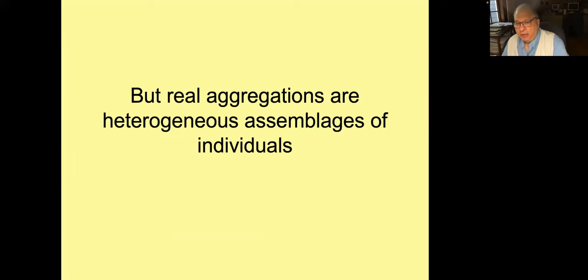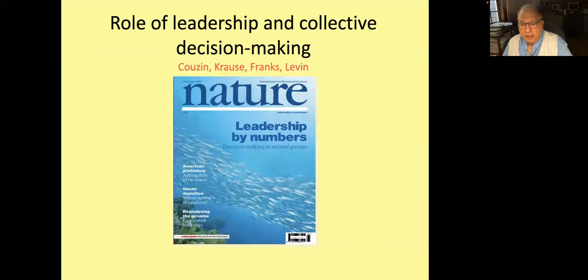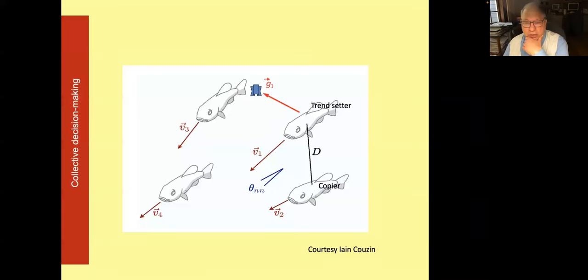By appropriate assumptions, he developed what we would call a Lagrangian rule, where you track every individual. What one wants to do is go from that to the equivalent of a diffusion equation, developing a partial differential integral equation description of the whole ensemble. This is like a diffusion equation, but there's also an integral term because if individuals are actually censusing a finite neighborhood around them, that term is going to remain. Real aggregations are heterogeneous assemblages of individuals. This led us to think about the role of leadership and collective decision-making.